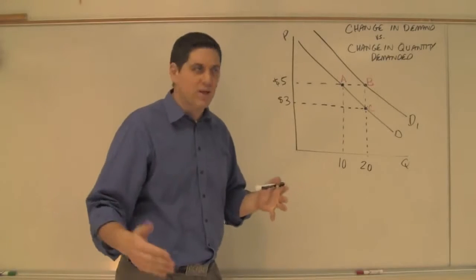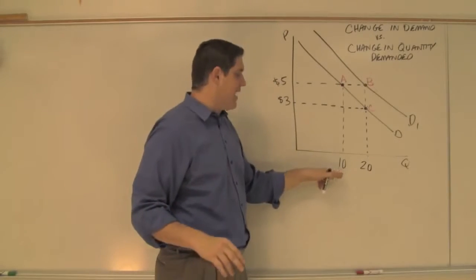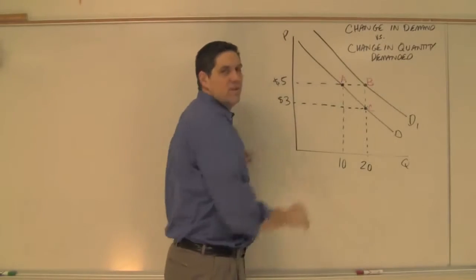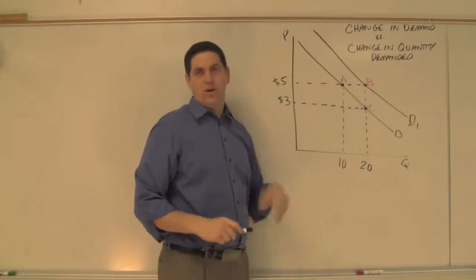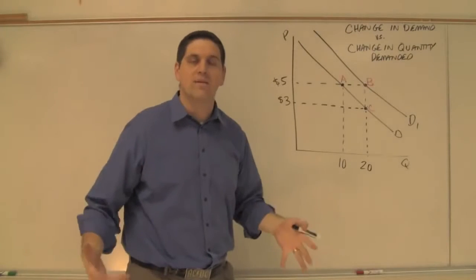You know what that means, right? Inverse relationship between price and quantity. We have two ways of getting from 10 to 20. There's A to B, which is a whole shift in the curve, and there's A to C, which is movement down along the curve. The question is, which one's a change in demand and which one's a change in quantity demanded?